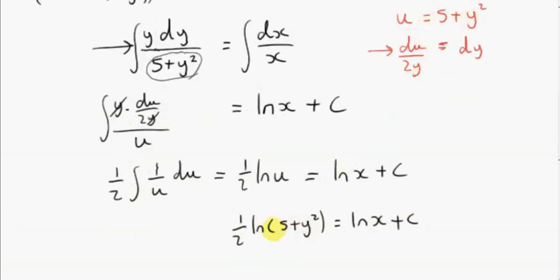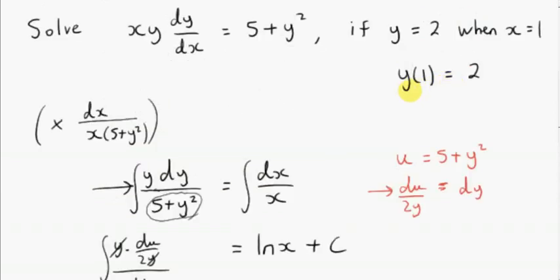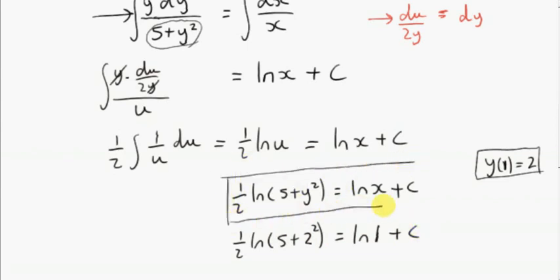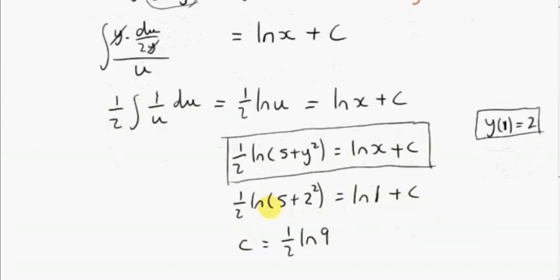So now we just put back 5 plus y squared for u, and we go to our boundary conditions. We want y of 1 to equal 2, so this means that if we set x equal to 1, then y is 2. We want y to be 2 and x to be 1. This enables us to find c so that we can find a particular solution. This is just a general solution of the differential equation. Working this out, we get a half ln of 9. ln of 1 is 0, so c is a half ln of 9.